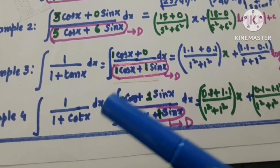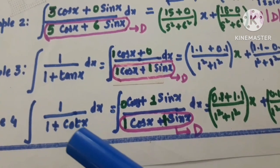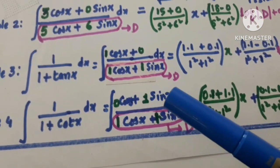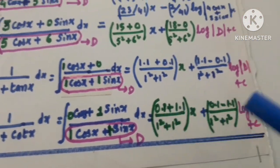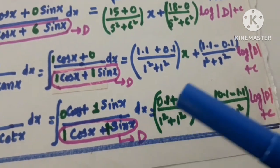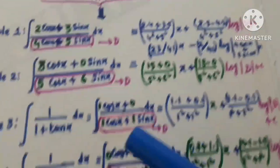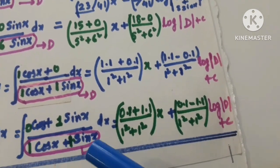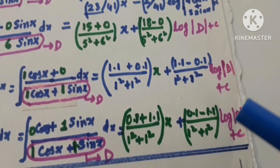Example number 4: 1 / (1 + cot x) dx. Convert cot x to cos x / sin x, so it becomes 1 / (1 + cos x / sin x) = sin x / (sin x + cos x). Apply the same formula: criss — 0×1 = 0, 1×1 = 1; cross — 0×1 − 1×1 over 1² + 1² for the denominator part, and log of the denominator plus C.